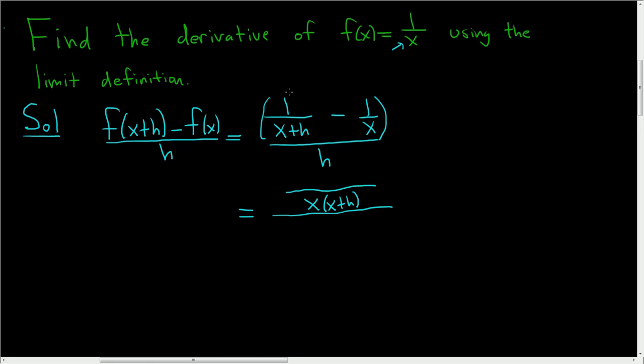Then the way I do this, it's going to be 1 times whatever is missing here to get the LCD. So we're missing an x. So 1 times x, minus 1 times whatever is missing here to get the LCD. So we're missing an x plus h. So x plus h.